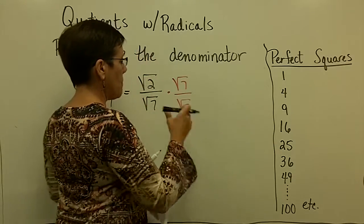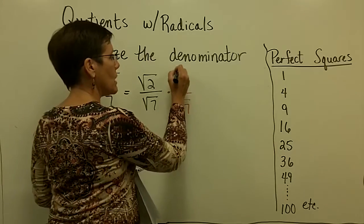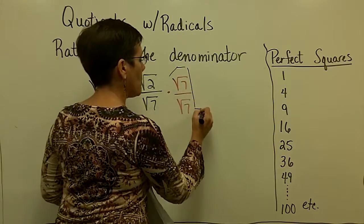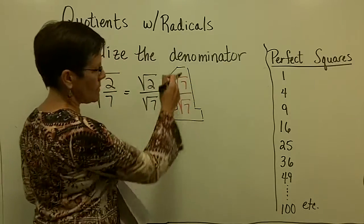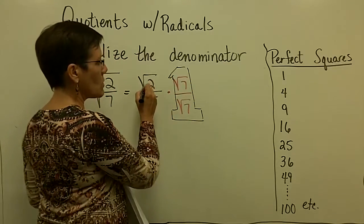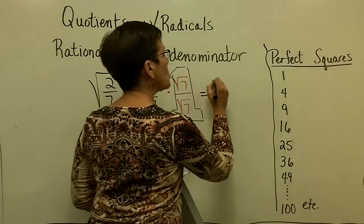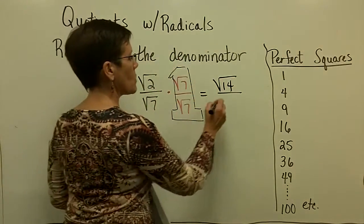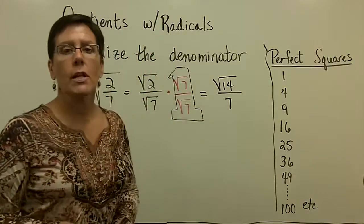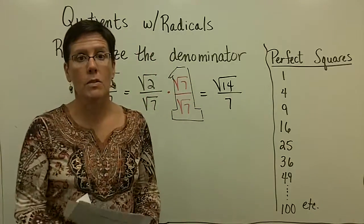I'm multiplying by the number one right here, that's the number one, and in the numerator, the square root of two times the square root of seven, product rule says that's the square root of 14. And in the denominator, the square root of seven times the square root of seven is seven. And I rationalize the denominator. There's no radical in my basement now, all done.